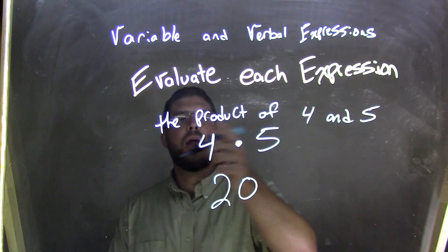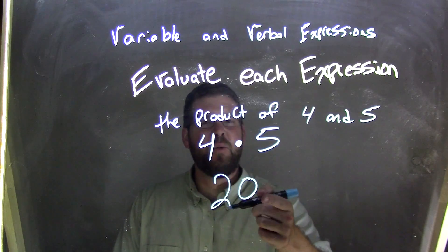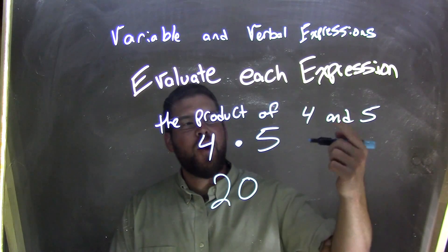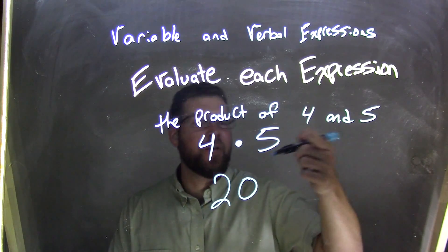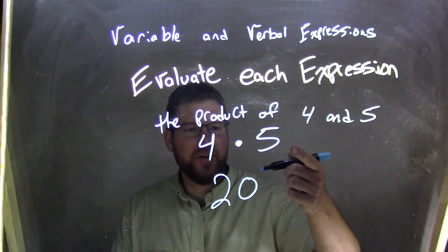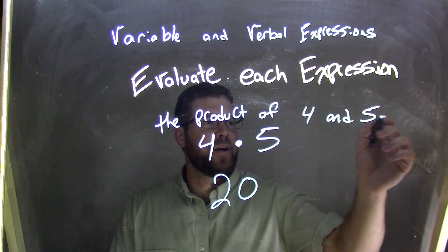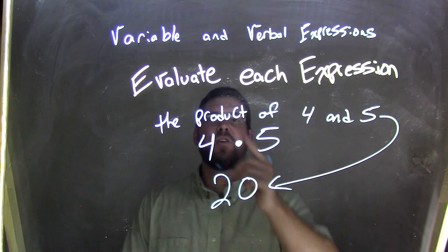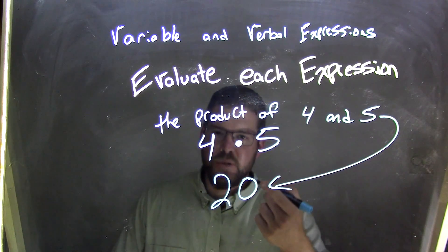So the product of four and five, four times five is 20. We have that verbal expression. We converted that to a variable expression, and we evaluated it to be 20.